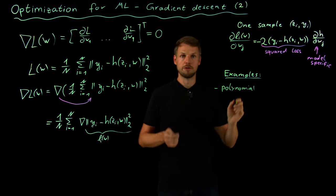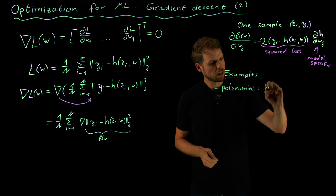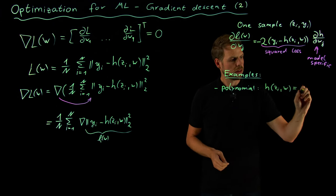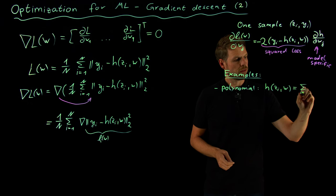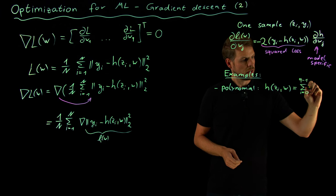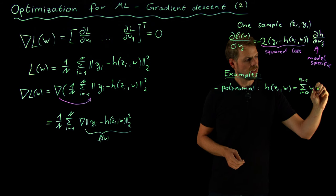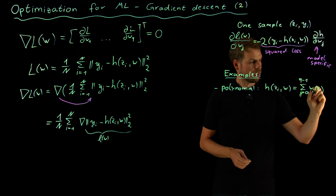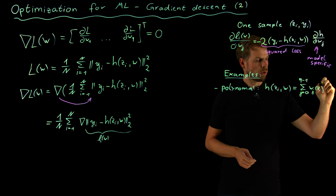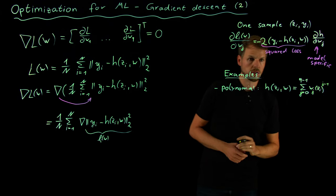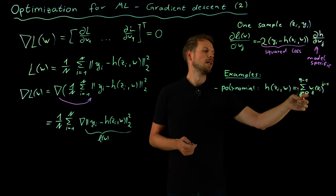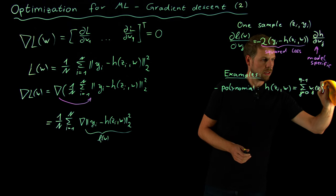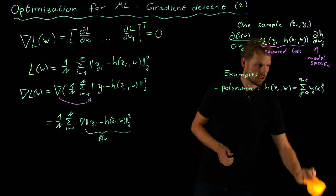And now let's consider a polynomial model. So it's a linear model with polynomial features. What we had here was the model h of z_i, the i-th input and w, is nothing but the sum from j = 0 to q minus 1 of the j-th weight times z_i raised to the power of j. So this would be w_0 plus w_1 times z_i plus w_2 times z_i squared and so on until we add the power q minus 1.